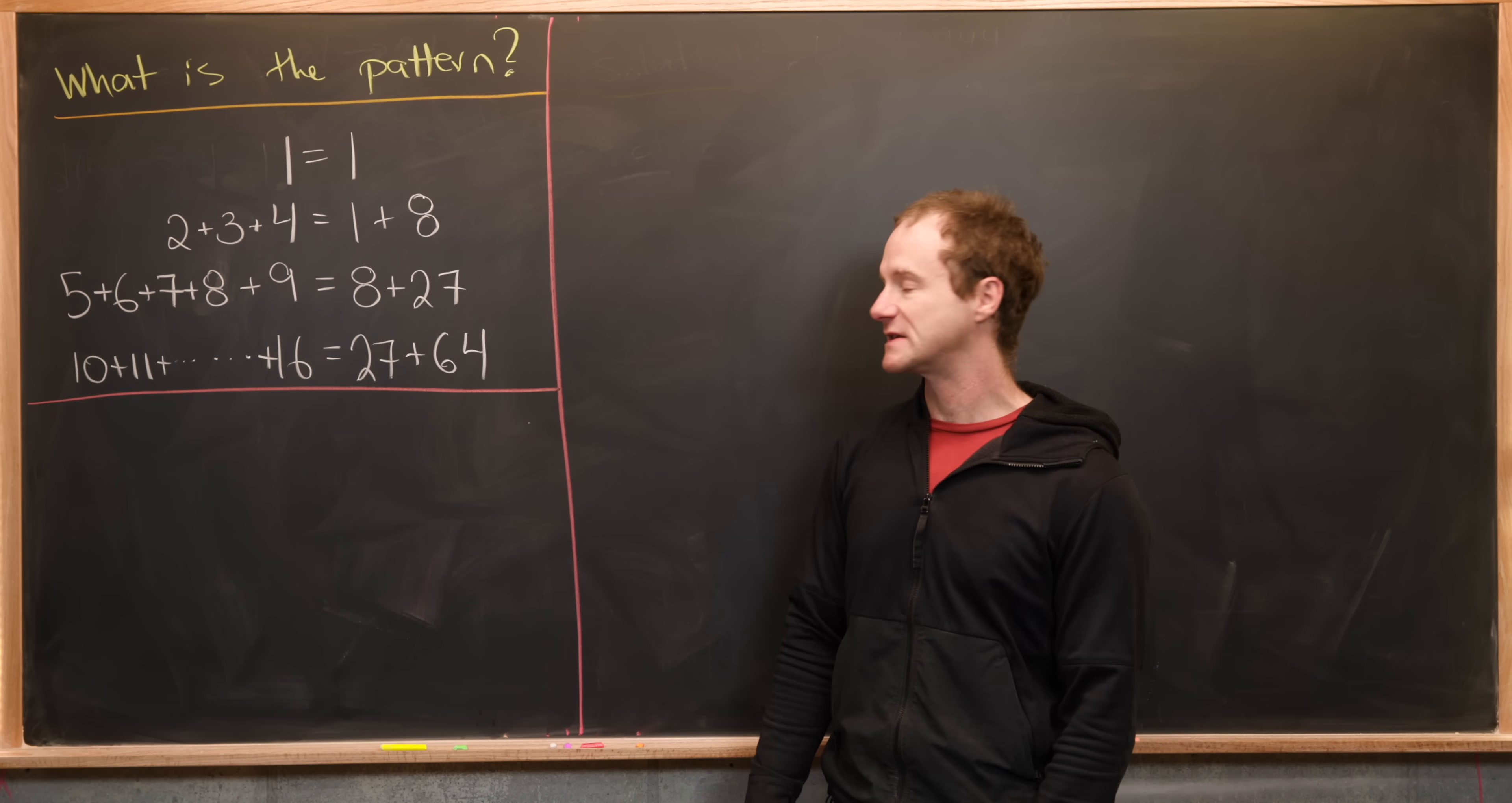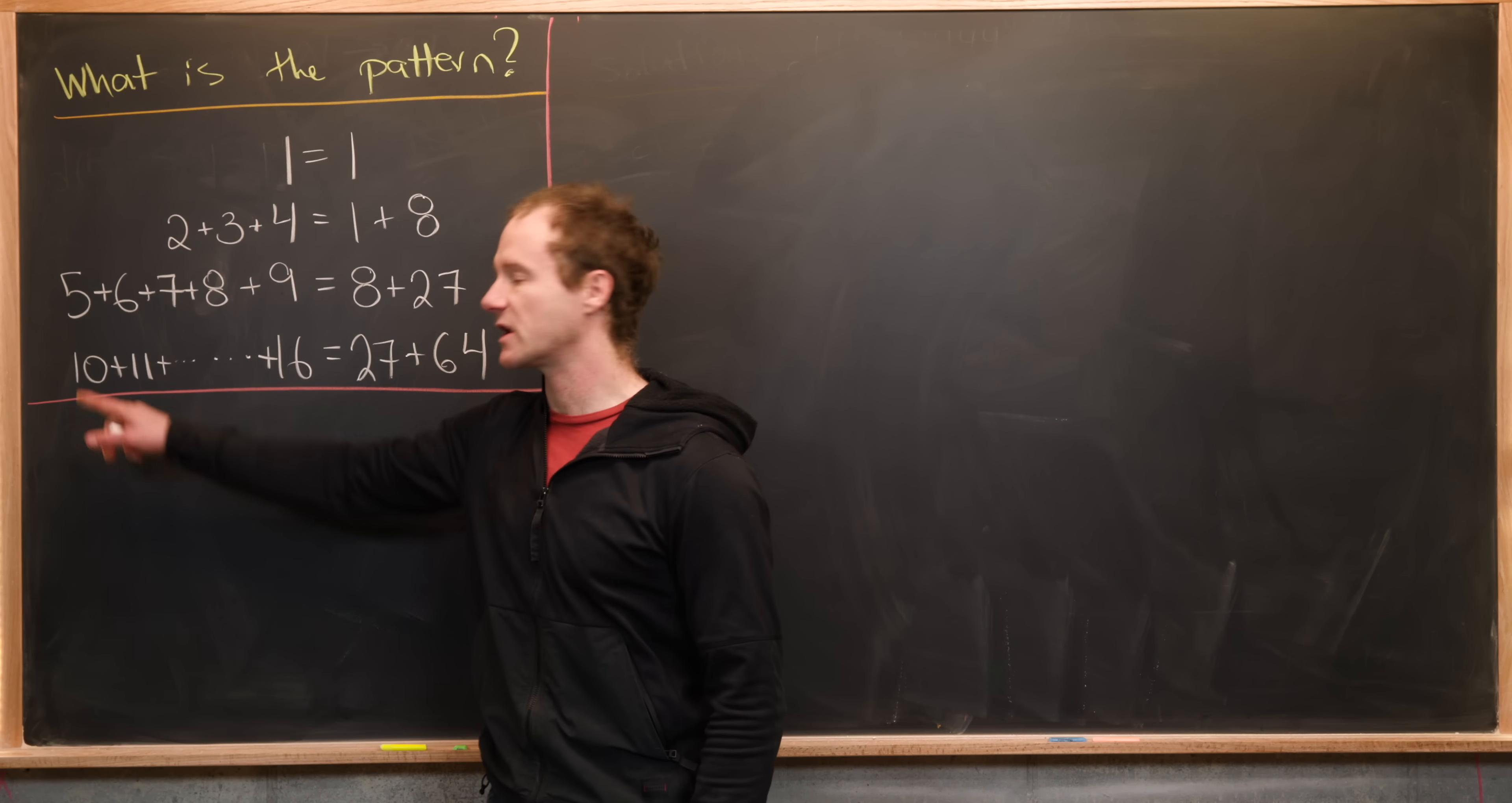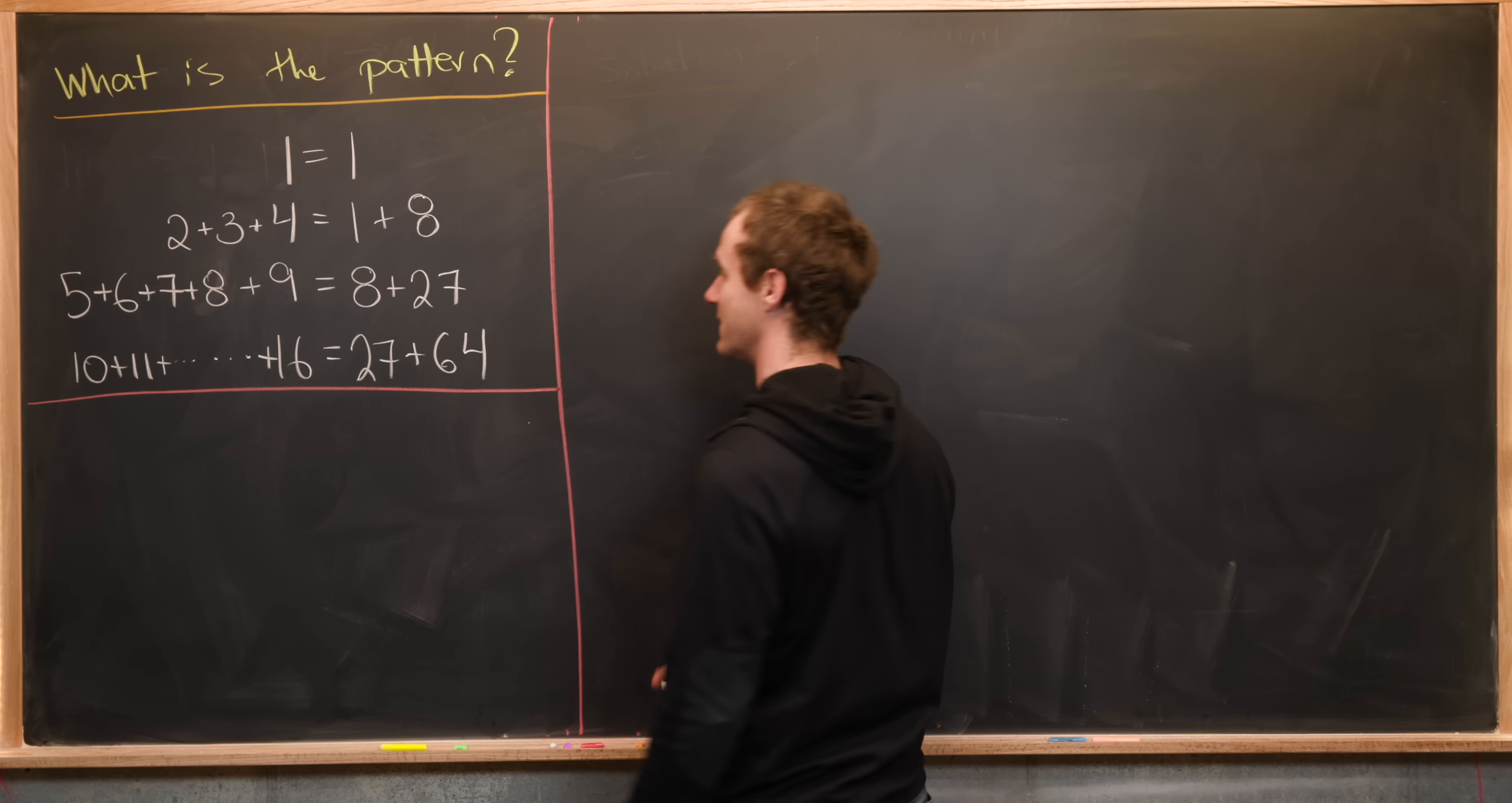So maybe a good place to start for this would be to guess the next case. So let's see if we can see what the next case would be. Notice that the ending point of this step is one less than the starting point of the next step. So notice here we end at 9, here we start at 10. Here we end at 4, we start at 5. Here we end at 1, we start at 2. So that tells us that the next step should probably start at 17.